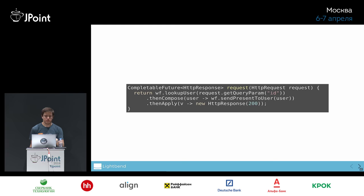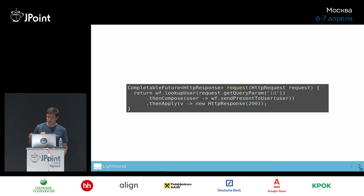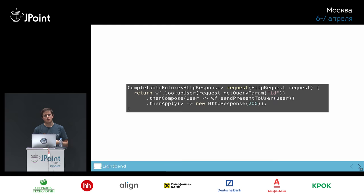One caveat: once you go into this style of programming, everything needs to be asynchronous. In this example, simple synchronous code starts using methods like thenCompose and thenApply. Looking up a user needs to return a CompletableFuture; making a request to an external service needs to return a CompletableFuture. thenCompose allows you to take the result of an asynchronous computation and start another asynchronous computation without using a thread in the meantime. thenApply is similar but tacks on a non-asynchronous mapping function, like turning the result into an HTTP response at the end.